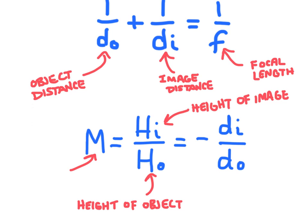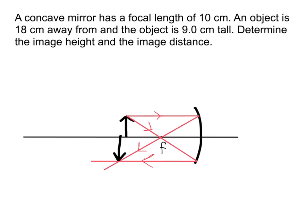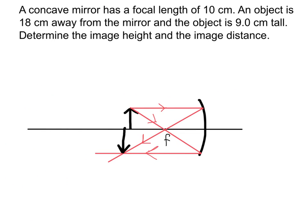So let's try using these equations to solve a problem. So this says a concave mirror has a focal length of 10 centimeters. And an object is 18 centimeters away from the mirror. And the object is 9.0 centimeters tall.